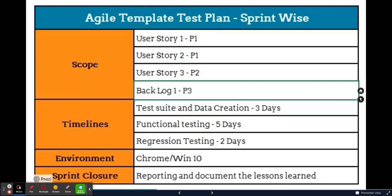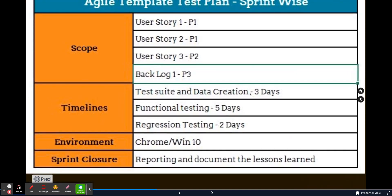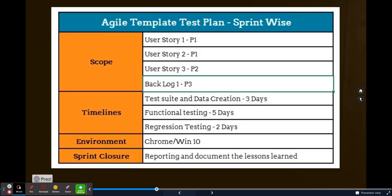So here it says there are different pointers. Number one is scope, that is the scope has the user stories and everything. Then it is timelines, that is the test suite and data creation, when should it be done, when should the functional testing be done, when should the regression testing be done, in which environment will it be done, when will the sprint be closed. All these different pointers pertaining to the project from the QA perspective, the different parameters that you need to discuss in regard to the project are recorded in test plan.